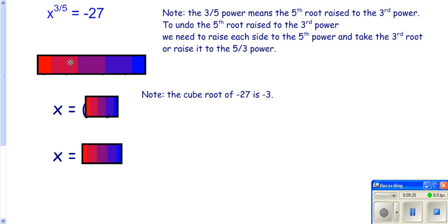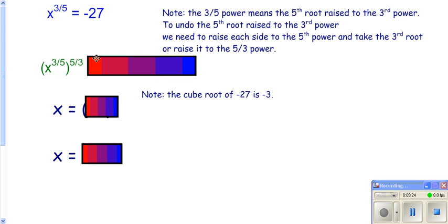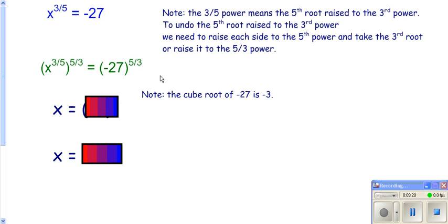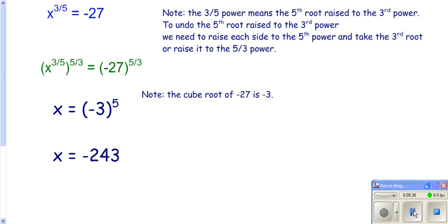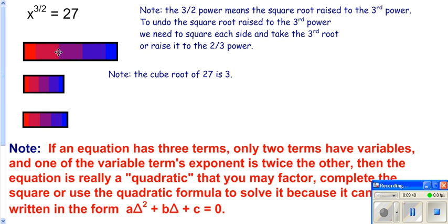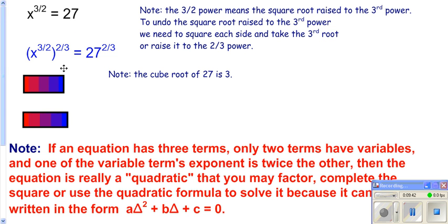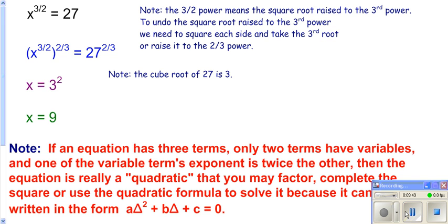Here, you want to get the exponent to be 1, so raise both sides to the reciprocal of your exponent. The cube root of negative 27 is negative 3, raised to the 5th power gives negative 243. Same idea on the other side: raise to the reciprocal power — take the cube root of 27, which is 3, then square it, and you get 9.